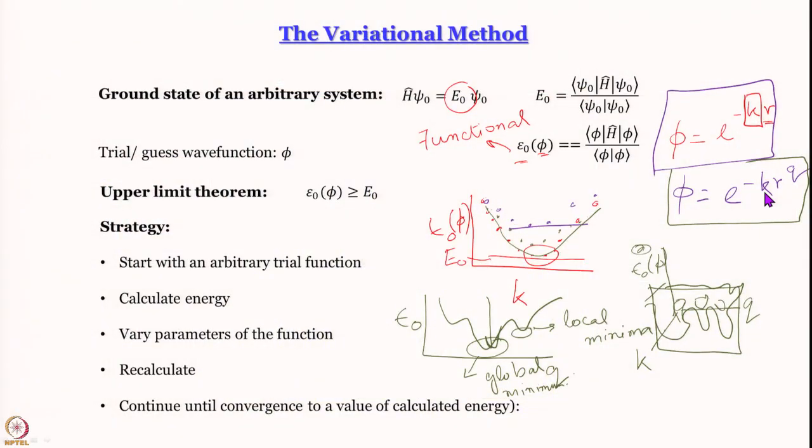We are discussing the variational method. We write a functional ε₀ which has the same form as the ground state energy. The difference is that the ground state energy involves the actual wave functions that we do not know. For ε₀, we have some trial guess wave function with associated variational parameters. We vary these parameters, calculate ε₀, and the upper limit theorem tells us that the minimum value of ε₀ is the upper bound of E₀.